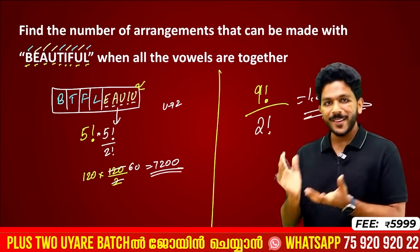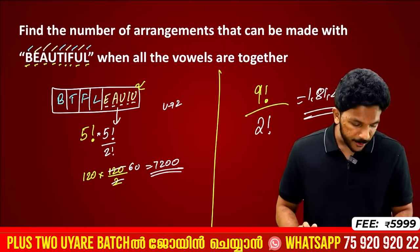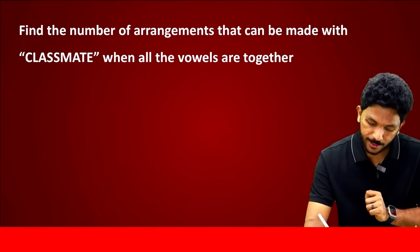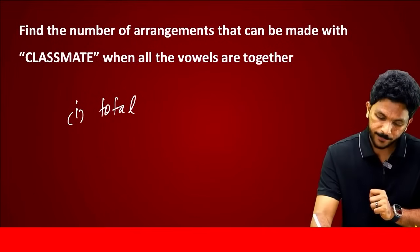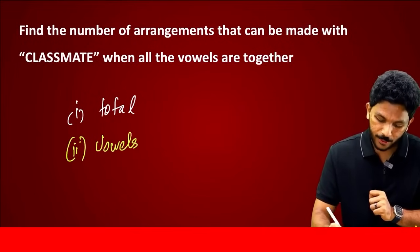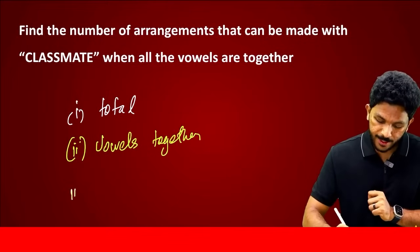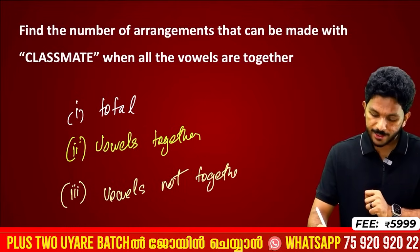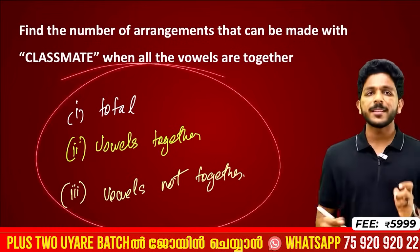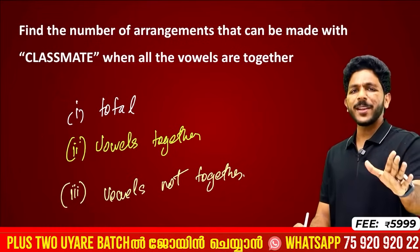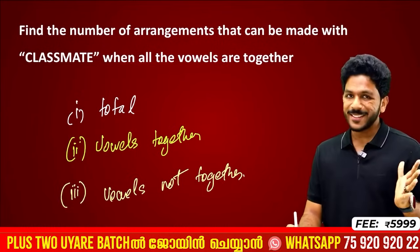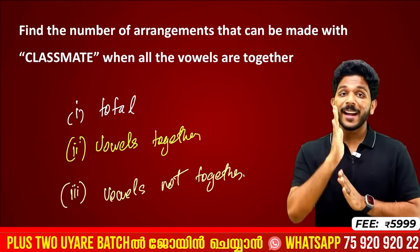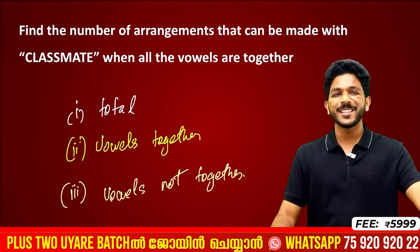The word CLASSMEET has three questions: first, total arrangements; second, vowels together (bubbles together); and third, vowels not together. Some of you have already answered in the comments. If you want to learn word arrangements, subscribe to the channel, like, and share with your friends. Join on WhatsApp too. Bye!